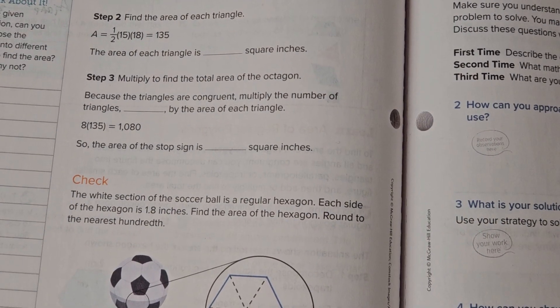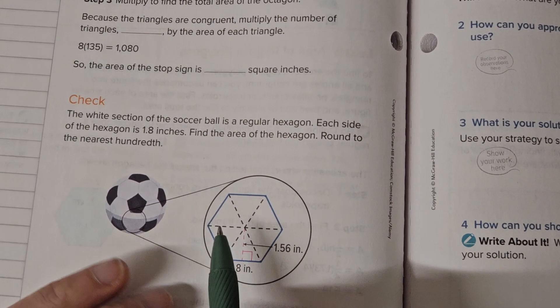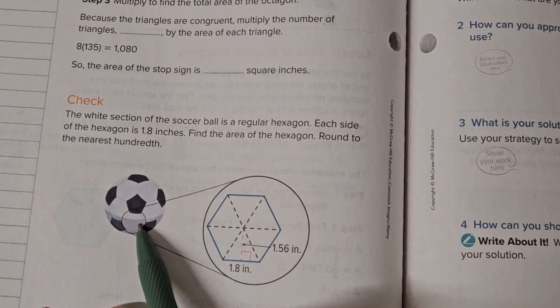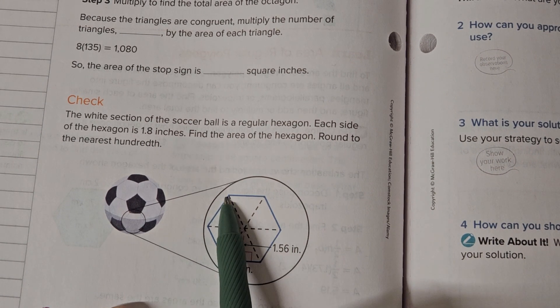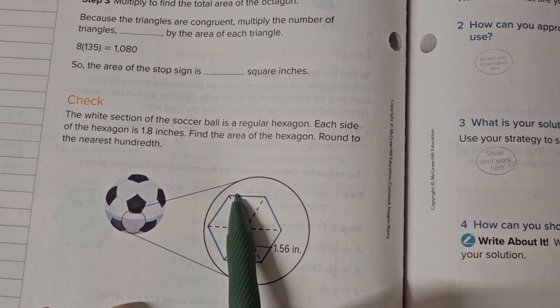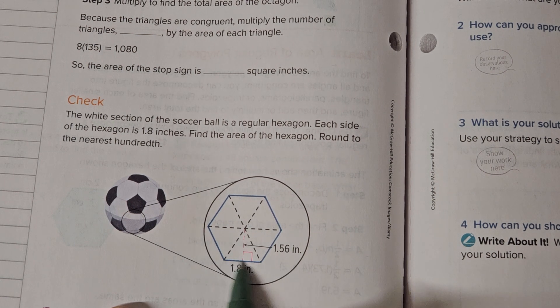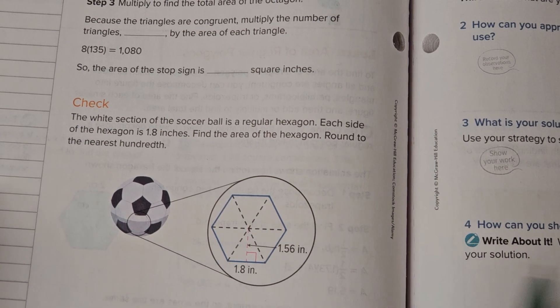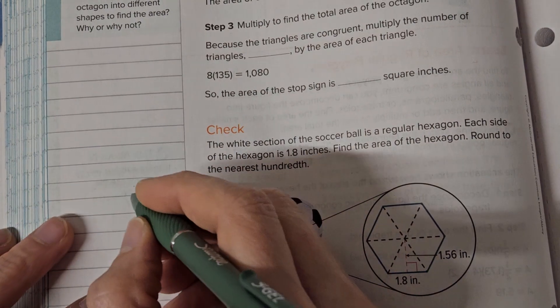So here we have a hexagon on most soccer balls. The white shape is a hexagon, which has one, two, three, four, five, six sides. And if they tell us the base is 1.8 inches and then that distance to the center is 1.56, well, we know the area of a triangle is base times height.